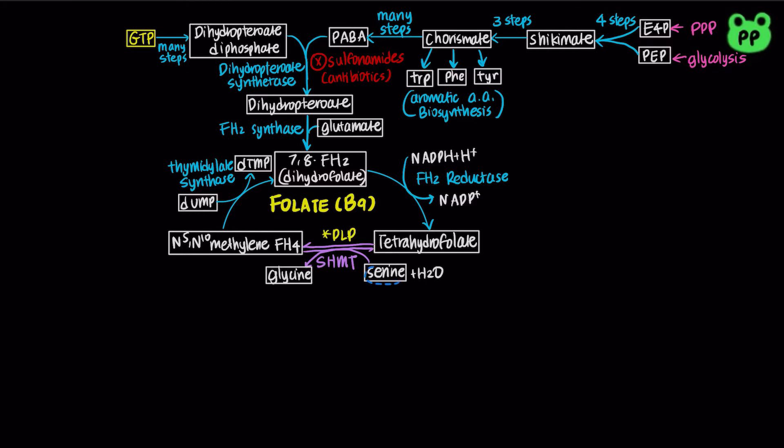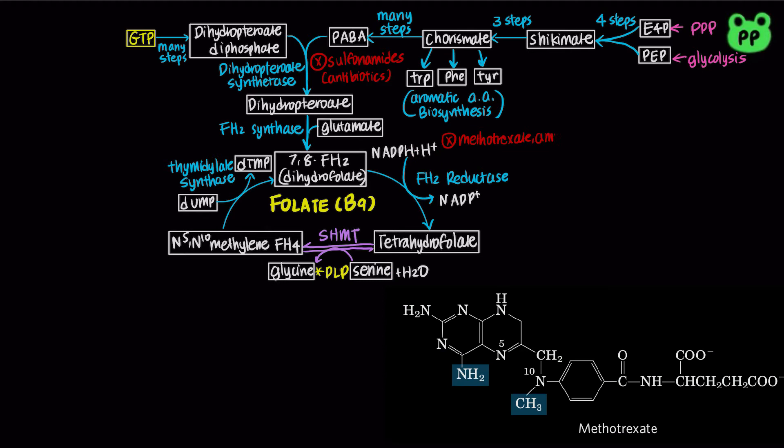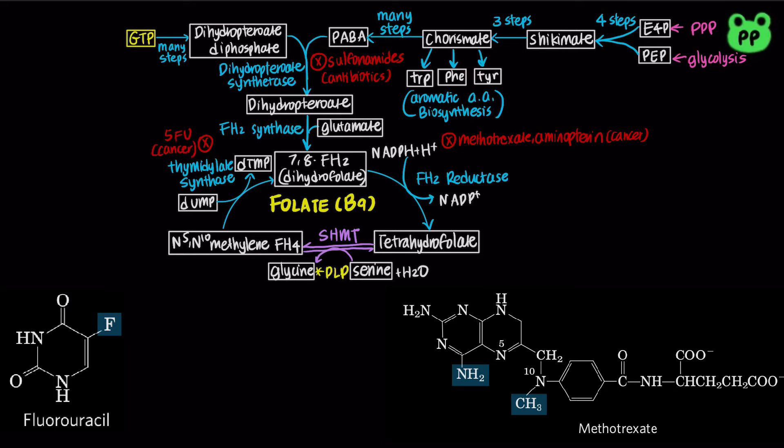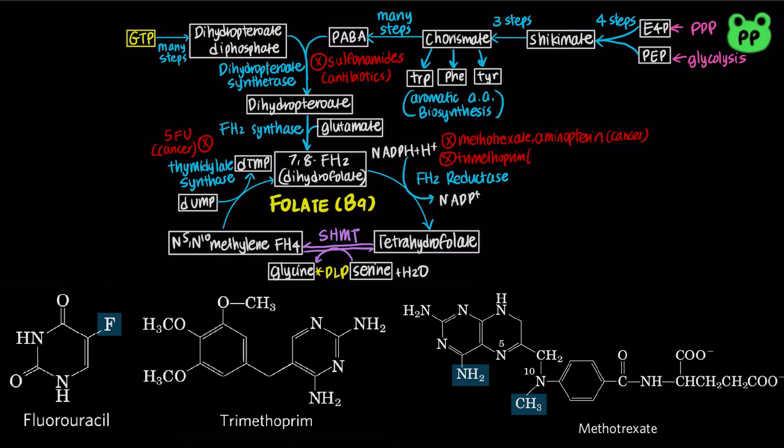Several anti-cancer drugs target DNA synthesis pathways, as it would have heavier impact on cancer cells. Methotrexate and aminopterine inhibit dihydrofolate reductase, whereas 5-fluorouracil, abbreviated as 5-FU, inhibits thymidylate synthetase. The antibiotic trimethoprim selectively inhibits bacterial dihydrofolate reductase.